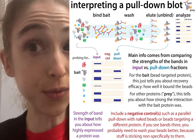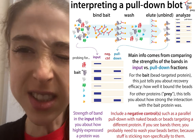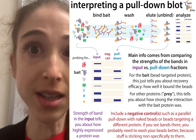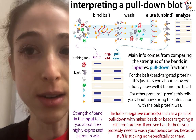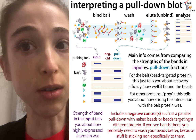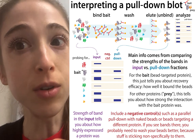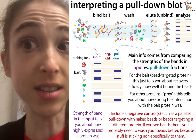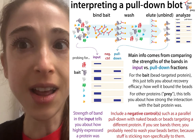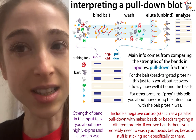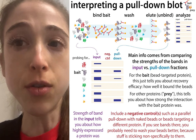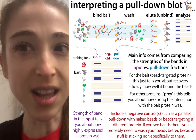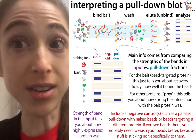No matter how complex these figures get, the key is to spot the difference — find where a band appears or disappears. Then go above that place in the blot, look up at the table, and see what's there and what's missing. When a band disappears because a component is absent, that tells you that component is needed for the interaction. If you take away that component and still see the band, it tells you that component isn't needed. No matter how complicated, spot the difference, look up in the table, and see what's there and what's not. I hope this helps you understand these figures.